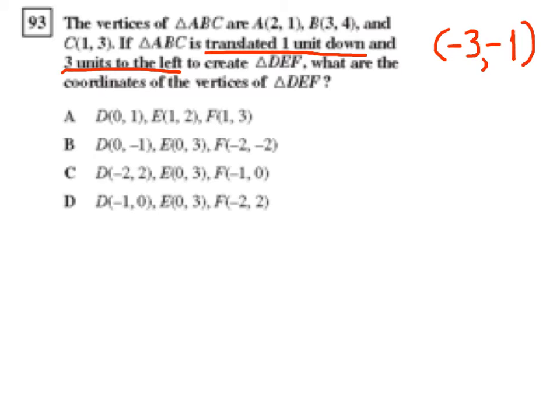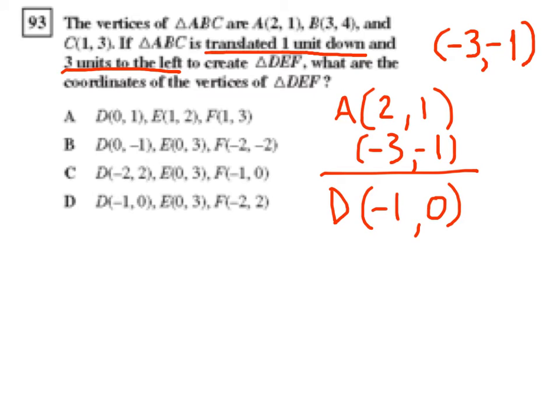So essentially if we take point A and we have 2, 1, and then we add negative 3 comma negative 1 to point A, we'll get its new point D. So 2 plus negative 3 is negative 1, and 1 plus negative 1 is 0, so there's D.